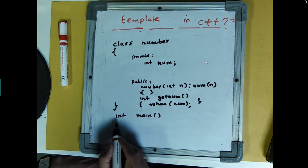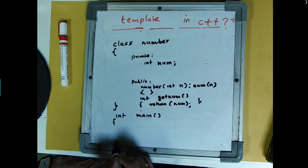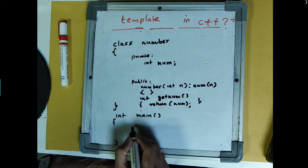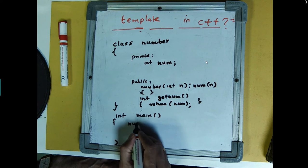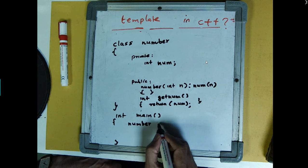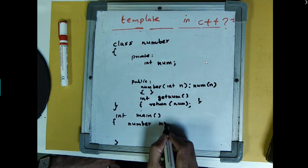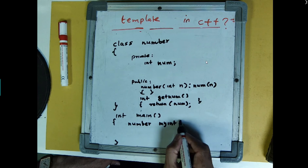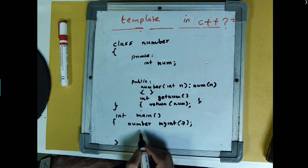Now let's say in the main, you wanted to create an object of the variable number, let's say my integer, my integer, and after that you pass a number 7 or something.